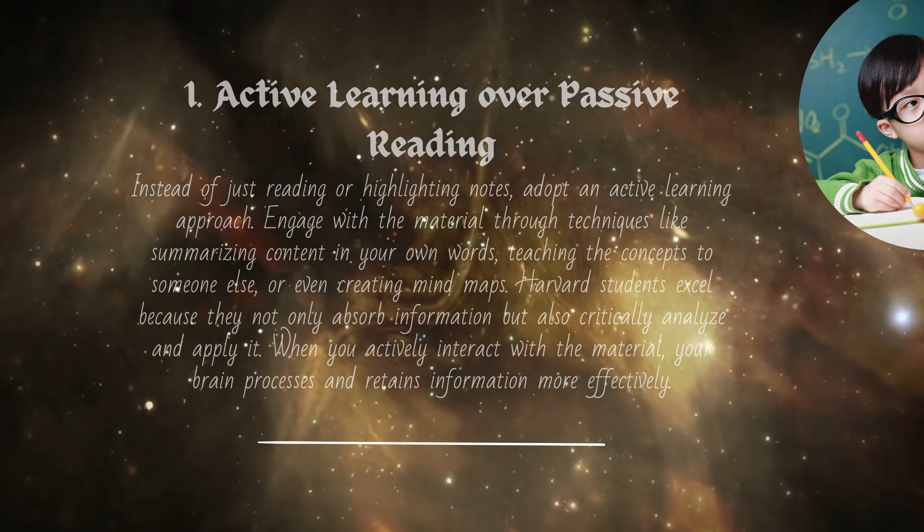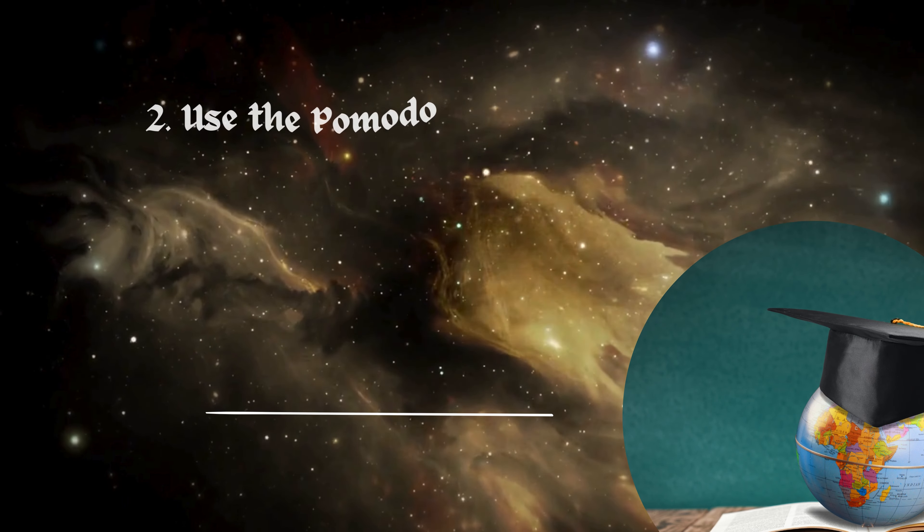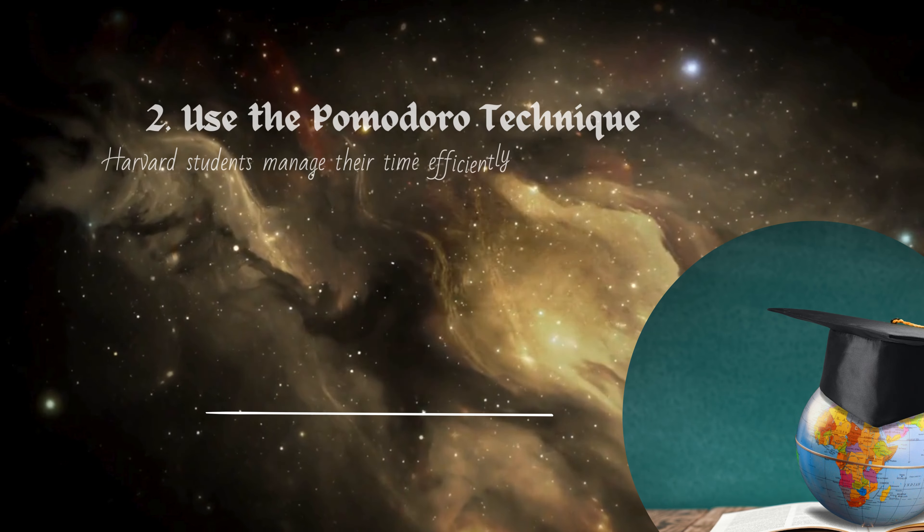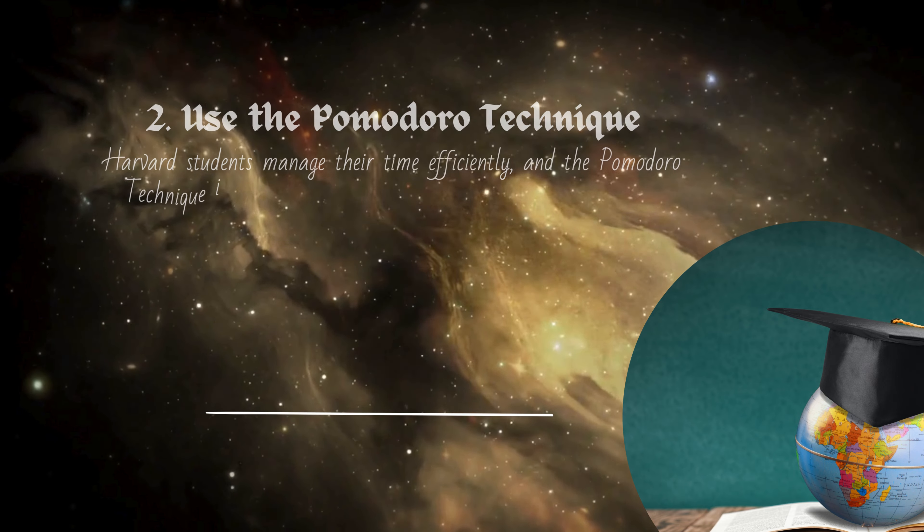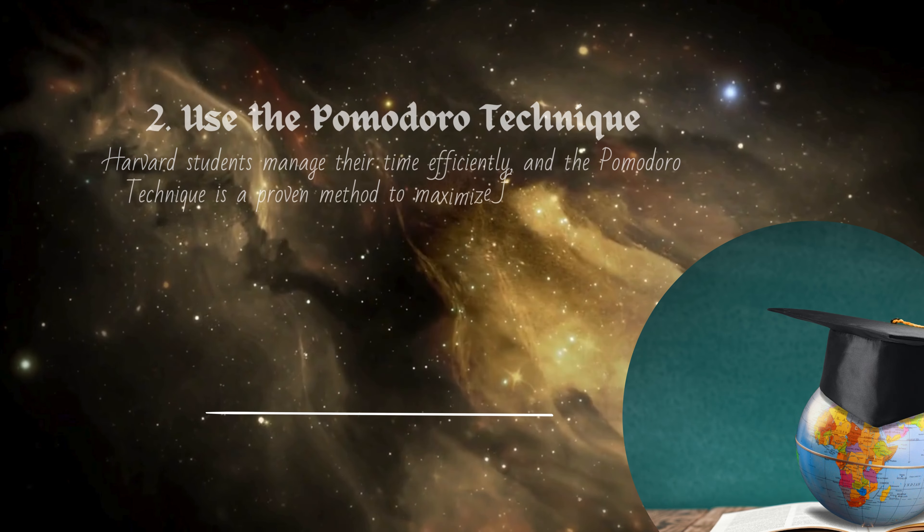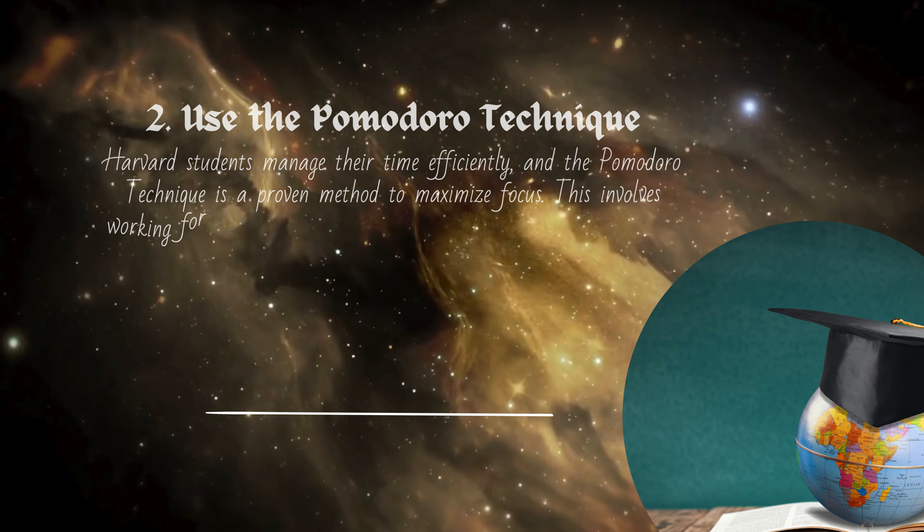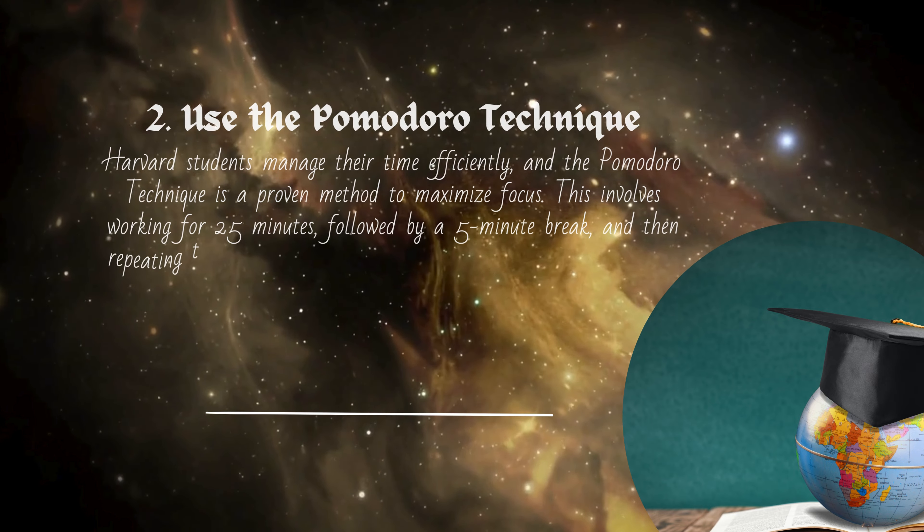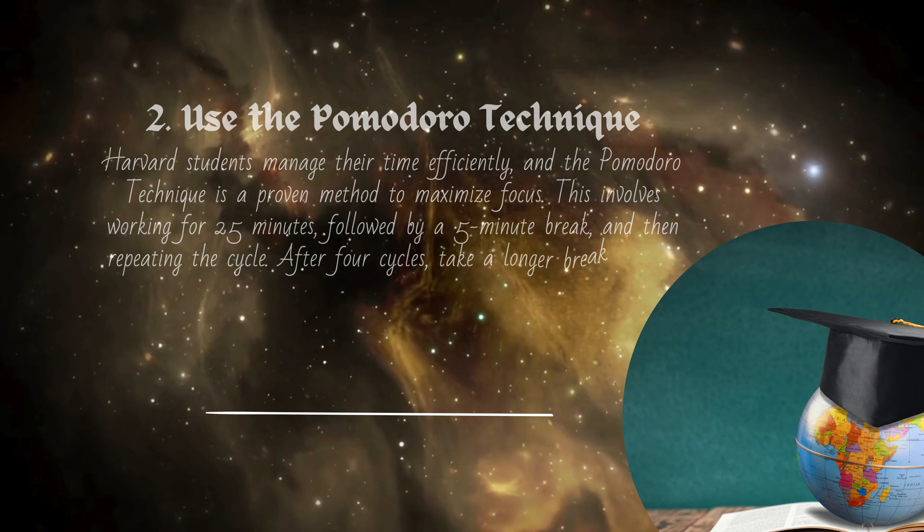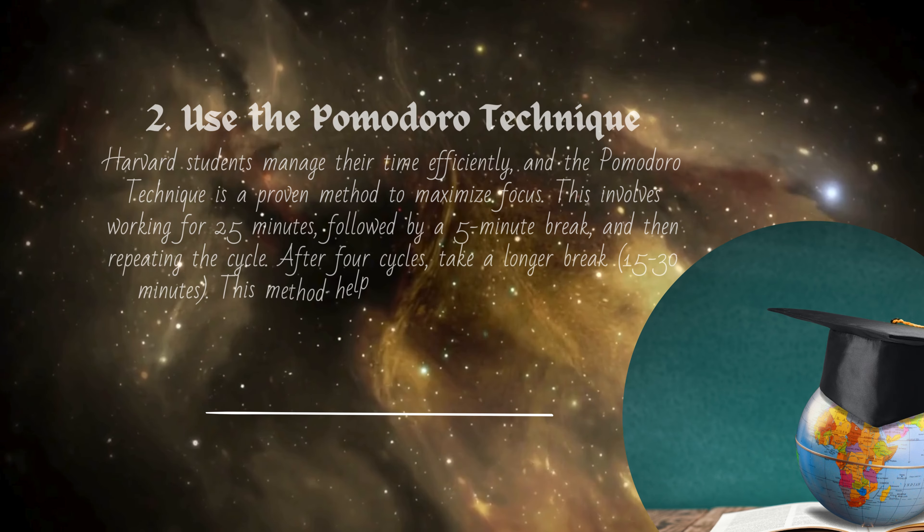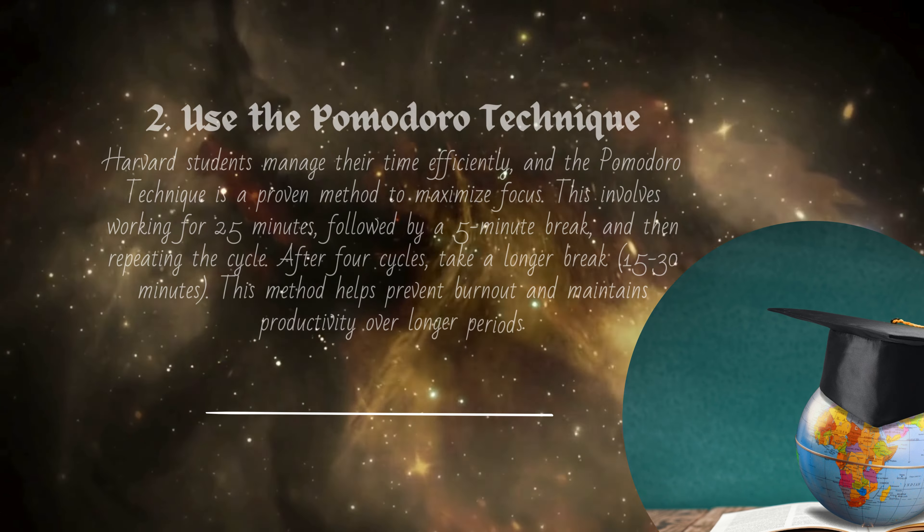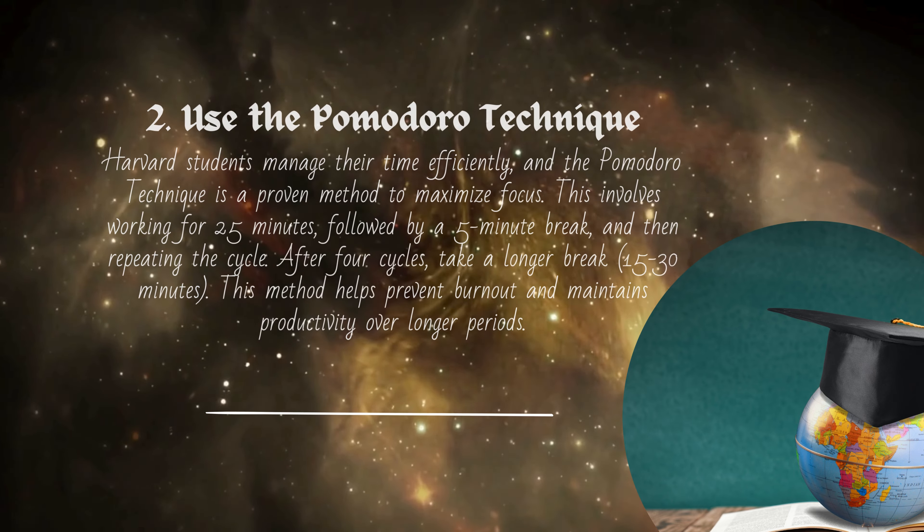processes and retains information more effectively. Two: Use the Pomodoro technique. Harvard students manage their time efficiently, and the Pomodoro technique is a proven method to maximize focus. This involves working for 25 minutes followed by a five-minute break, and then repeating the cycle. After four cycles, take a longer break of 15 to 30 minutes. This method helps prevent burnout and maintains productivity over longer periods.